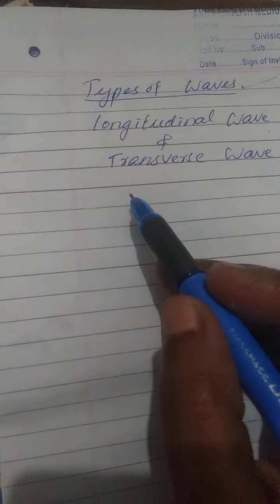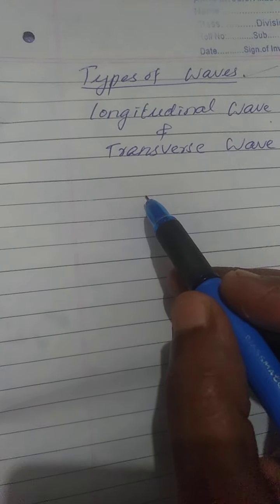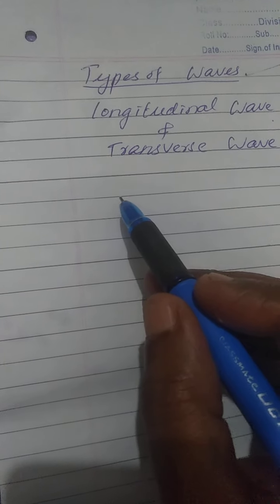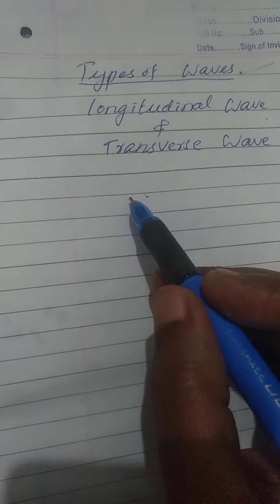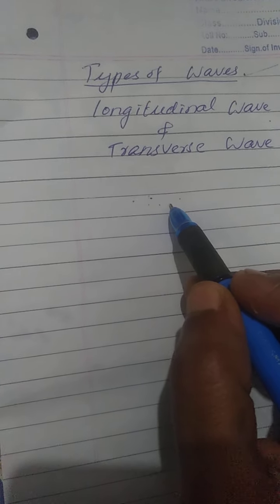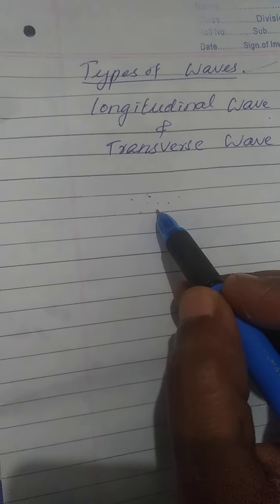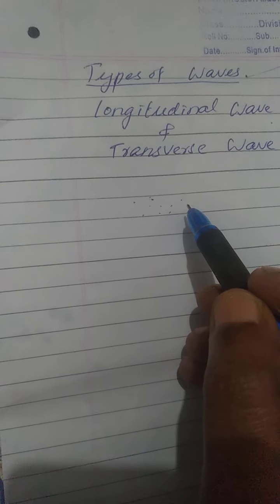When a sound is produced from a vibrating object, that is really a disturbance produced in the medium. Because sound is produced due to vibration. So when a vibration occurs, the particles present in the medium get disturbed.